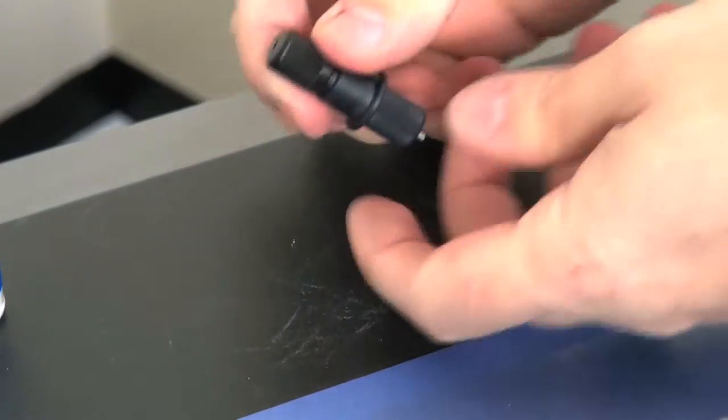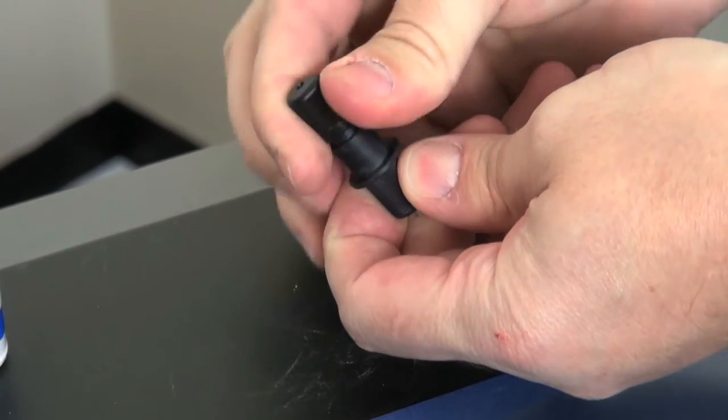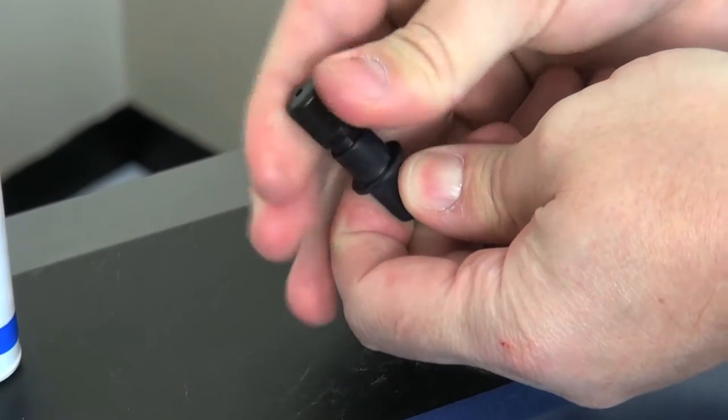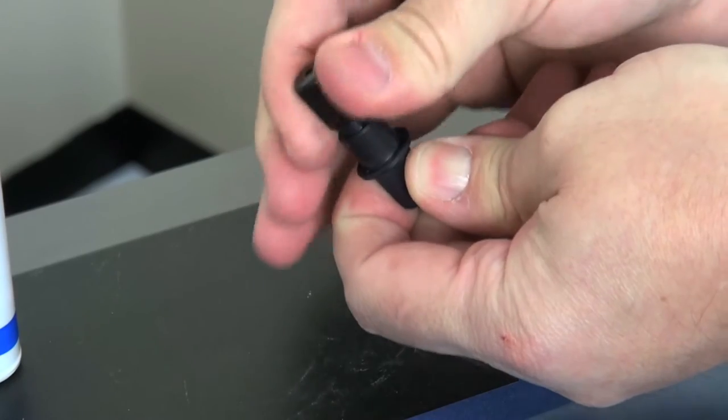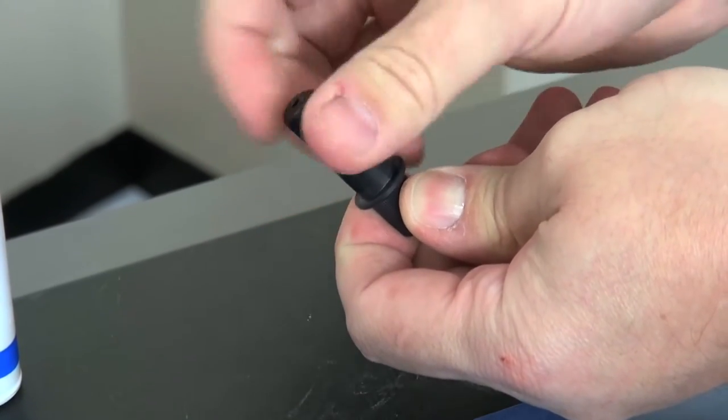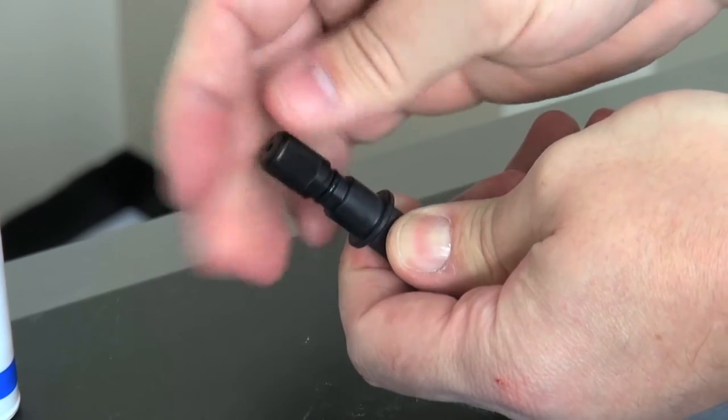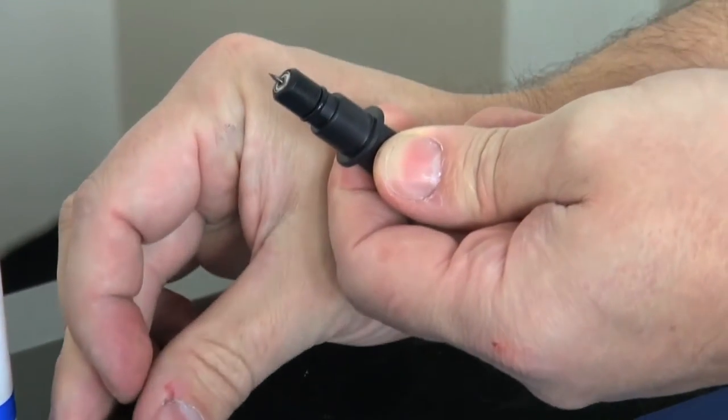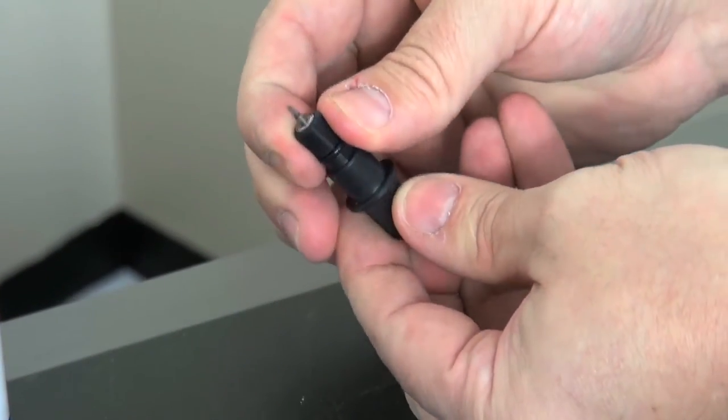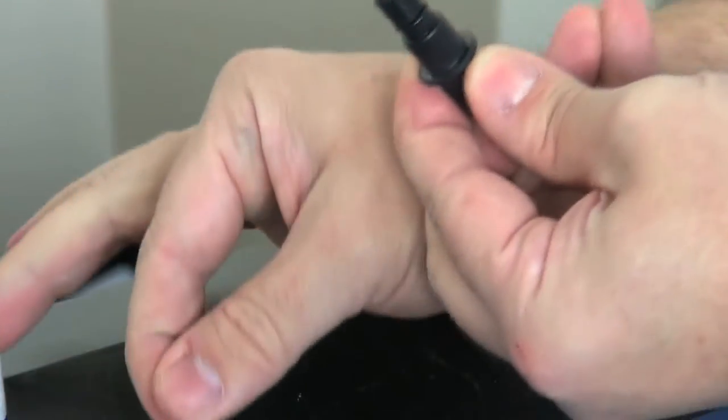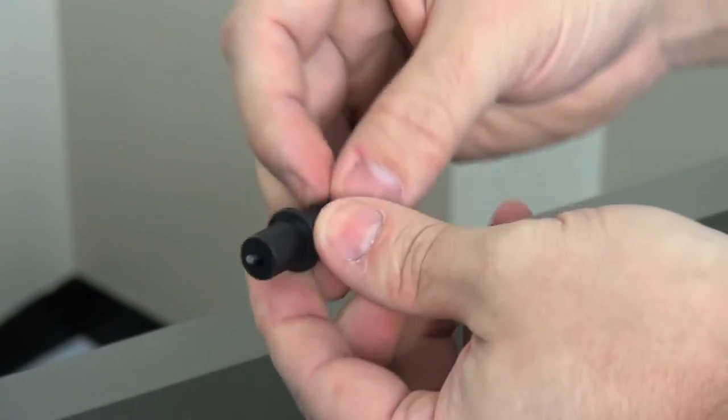Disassemble the blade holder assembly by unscrewing the cap, removing the blade, and removing the blade post.